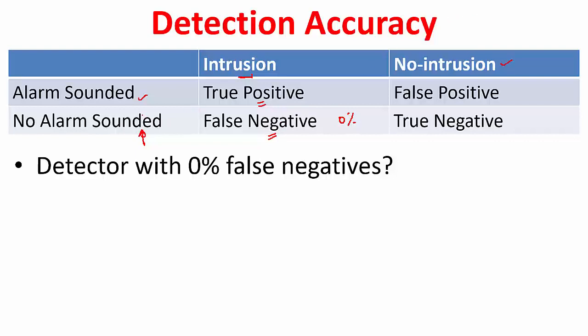Similarly, if there was no intrusion and still you sounded an alarm, this is called a false positive — we also want this to be zero percent. Because if there is no intrusion, you should not be sounding an alarm. And no intrusion with no alarm sounded is the ideal case, called a true negative. So you want both false negatives and false positives to be zero percent.